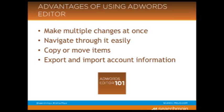You can also export information at all levels — the account level, the campaign level, and the ad group level — and then you can share these exported snapshots with others. This is really helpful because if you're working on an account team like I work on, I can work in Editor and then save the snapshot, email it over to one of the other account managers on the team, and then they can make changes, email it back, and I can import it back into Editor. That allows a bunch of people to work on something at once without getting mixed up with the changes that are made.